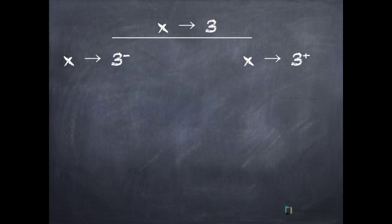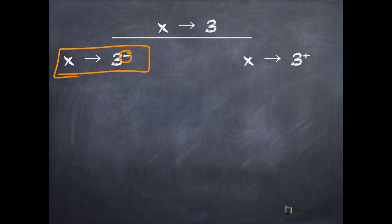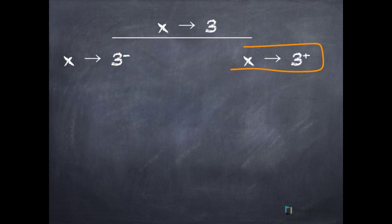Let's discuss some symbols. At the top, 'x approaches 3' means just that — x approaches 3. On the left, the notation means x approaches 3 from the left; this little negative superscript after the 3 means approaching from the left. On the right, the little plus superscript means you're approaching 3 from the right.